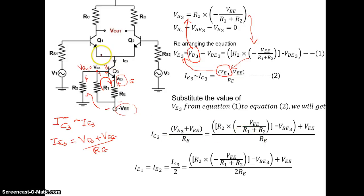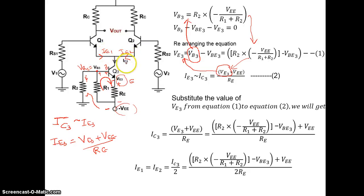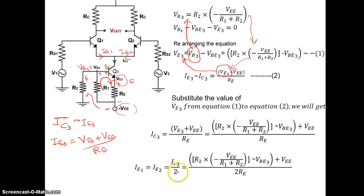IC3 is the sum of IE1 and IE2 — the emitter currents of transistors Q1 and Q2. If both transistors Q1 and Q2 are assumed to be equal, then IE1 equals IE2, so IC3 equals 2 times IE. Therefore, IE1 equals IE2 equals IC3 divided by 2, and all further calculations follow as in the previous DC analysis.